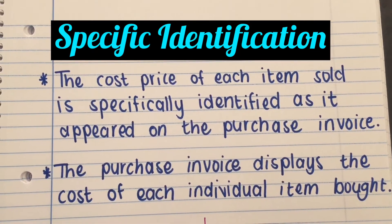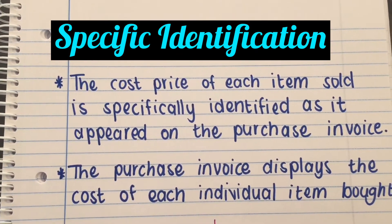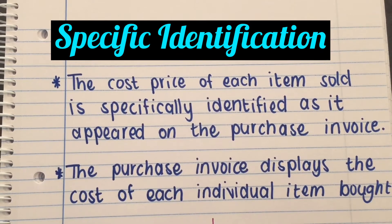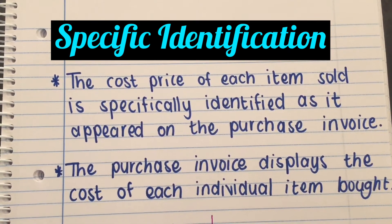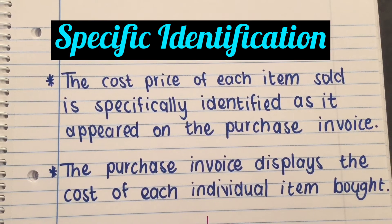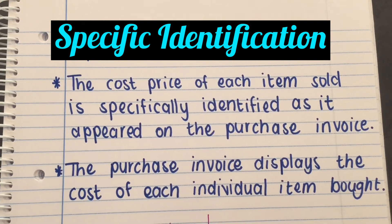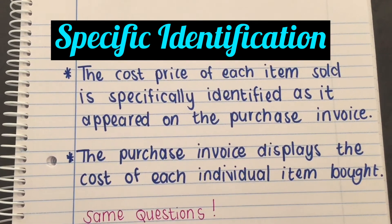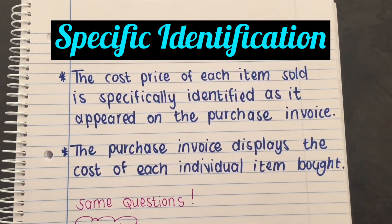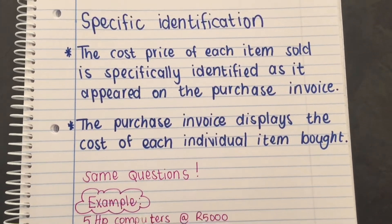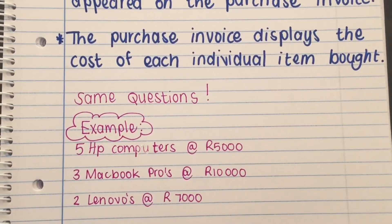The third method is called specific identification. A general definition says that the cost price of each item sold is specifically identified as it appears on the purchase invoice. The purchase invoice displays the cost of each individual item bought. We are still looking at the same five questions. To explain this, it's easier to look at an example involving computers, because that's normally where you use specific identification.